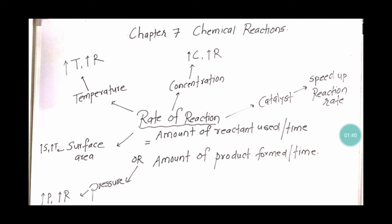The second factor is concentration. If there are more reactants present, they will be very close to each other, the frequency of collision will be high, and they will form the product more readily. So higher concentration means a higher rate of reaction.